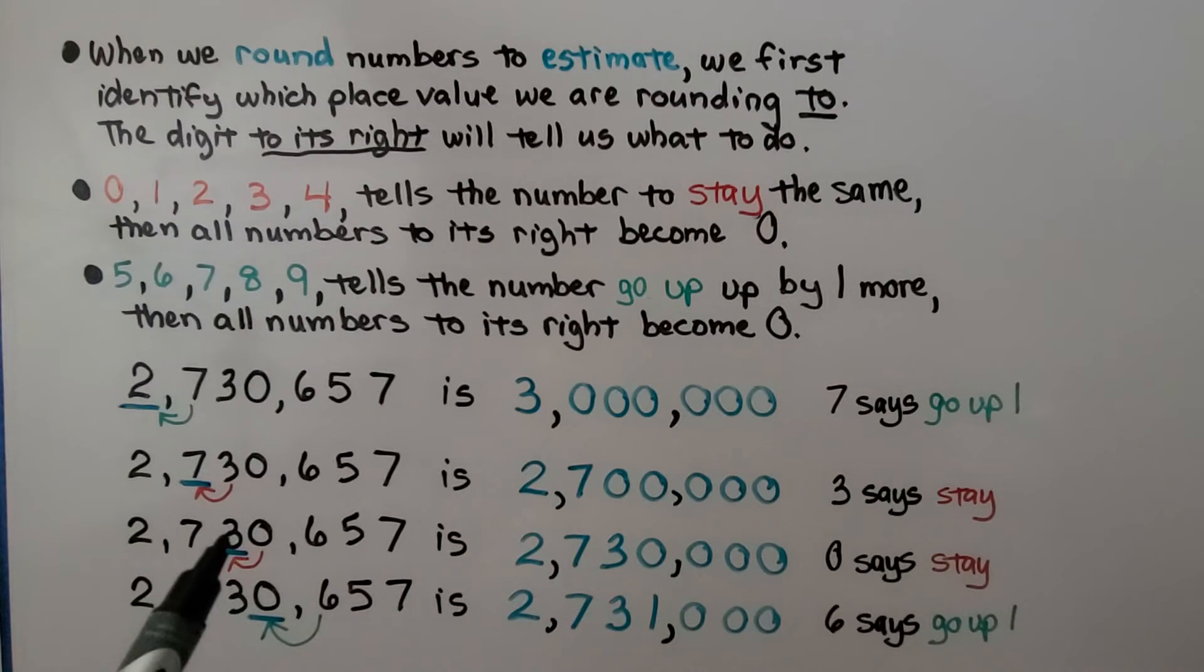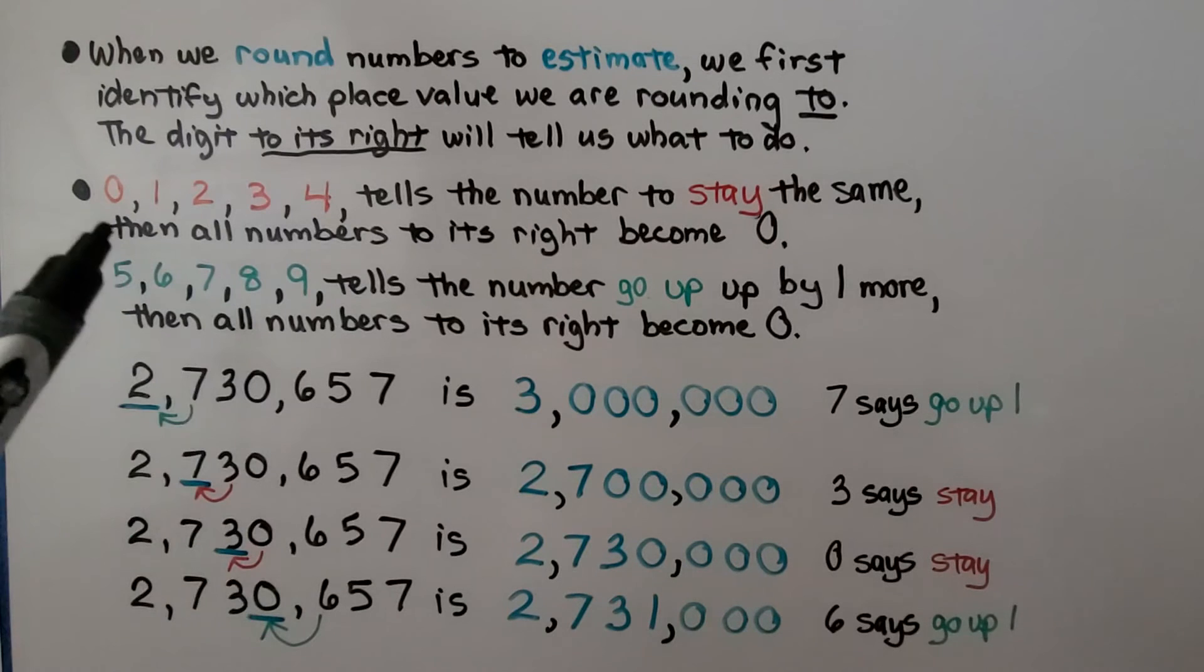If we're rounding it to the 3, that's the ten thousands place. If we look at the thousands place to the right, it's a 0. That tells it to stay the same. It's going to round to 2,730,000. If we're rounding it for the 0, which is in the thousands place, we're going to look to the 6 to its right, which is hundreds. And the 6 is going to tell the 0 to go up by 1, so it would round to 2,731,000. But we learned about rounding in 3rd, 4th, and 5th grade, so you should pretty much know what you're doing here.